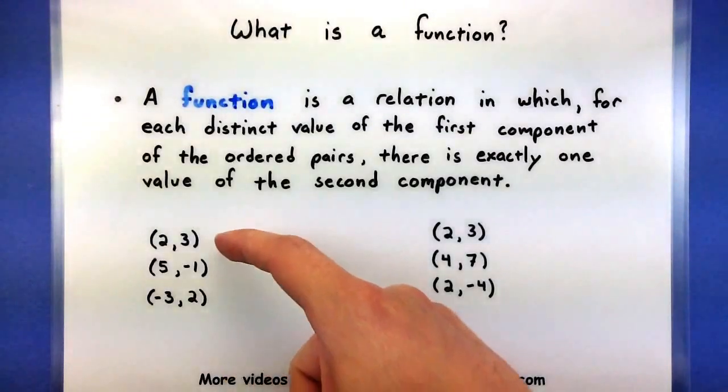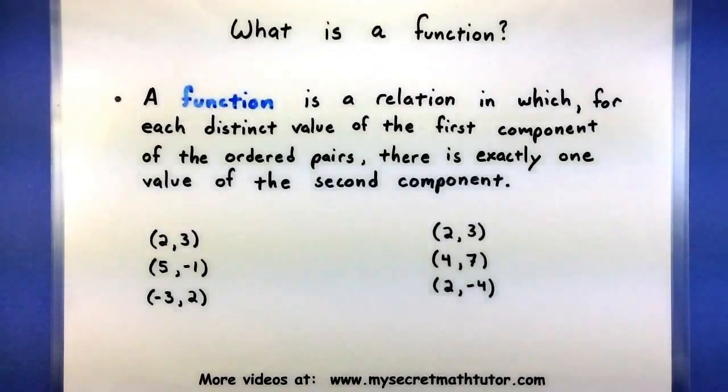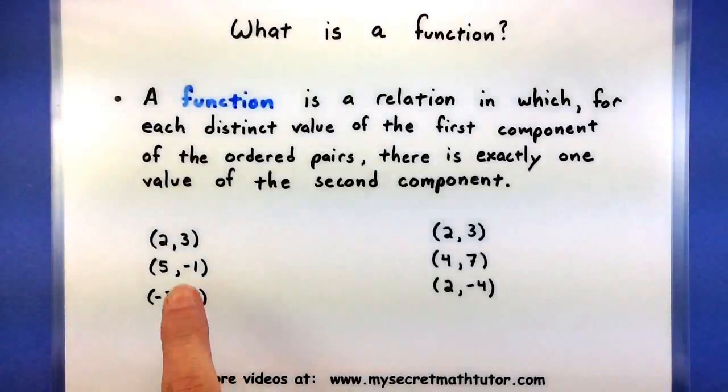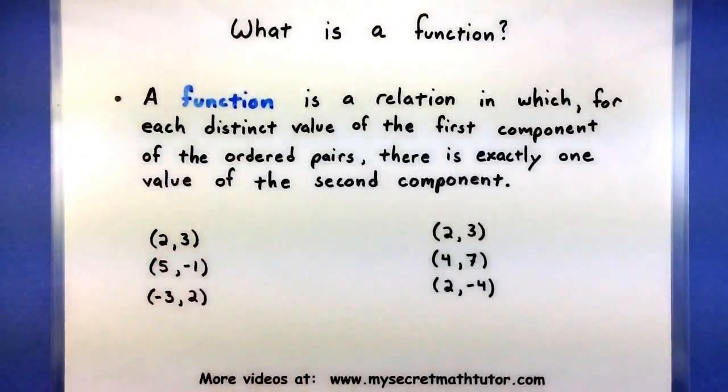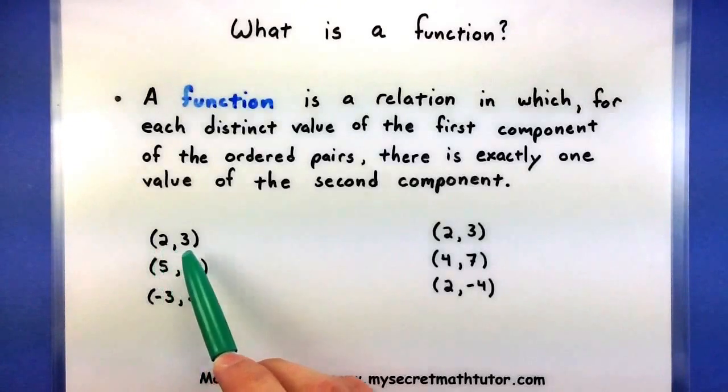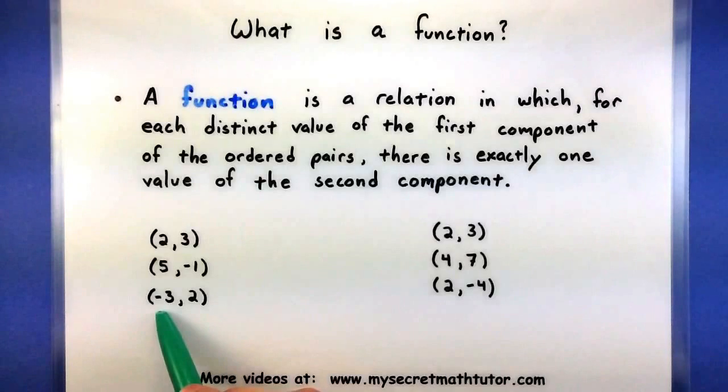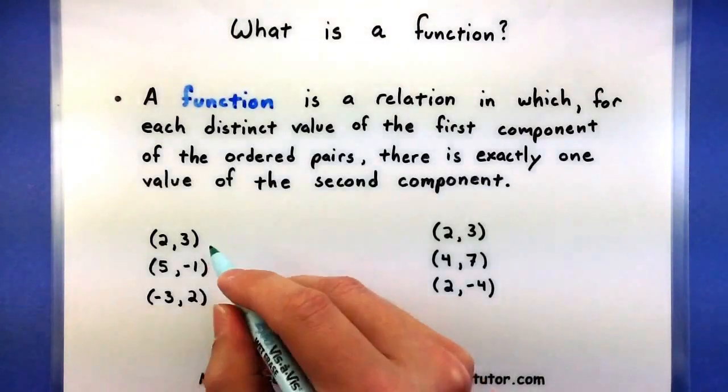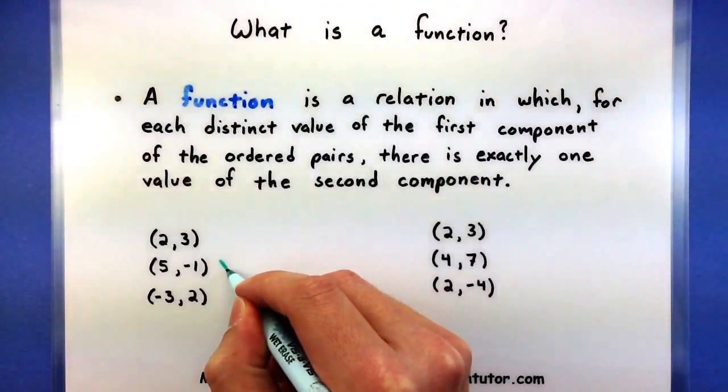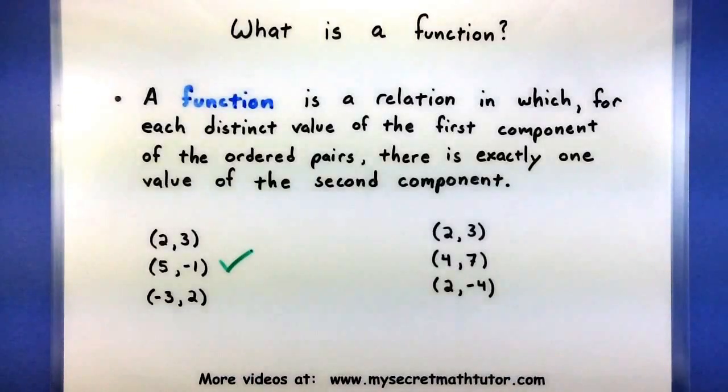Now, to really determine if this collection of things is a function, I have to make sure it satisfies my definition. So what I'm checking for is to make sure that for each of these ordered pairs, that the first value is only associated with one second value. Now, if you go through this first set, you actually see that it satisfies this definition. This is because two is associated only with a three, and the five is only associated with the negative one, and the negative three is only associated with the two. So since the first component is only associated with one of the second components, it definitely is a function.